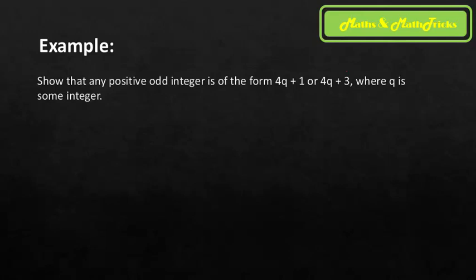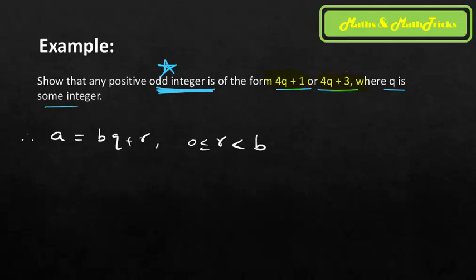One more example — another application of Euclid's Division Lemma: show that any positive odd integer is of the form 4q + 1 or 4q + 3, where q is some integer. So odd integers can also be expressed in these forms. Since a = bq + r with 0 ≤ r < b, and we want forms involving 4, choose divisor b = 4.